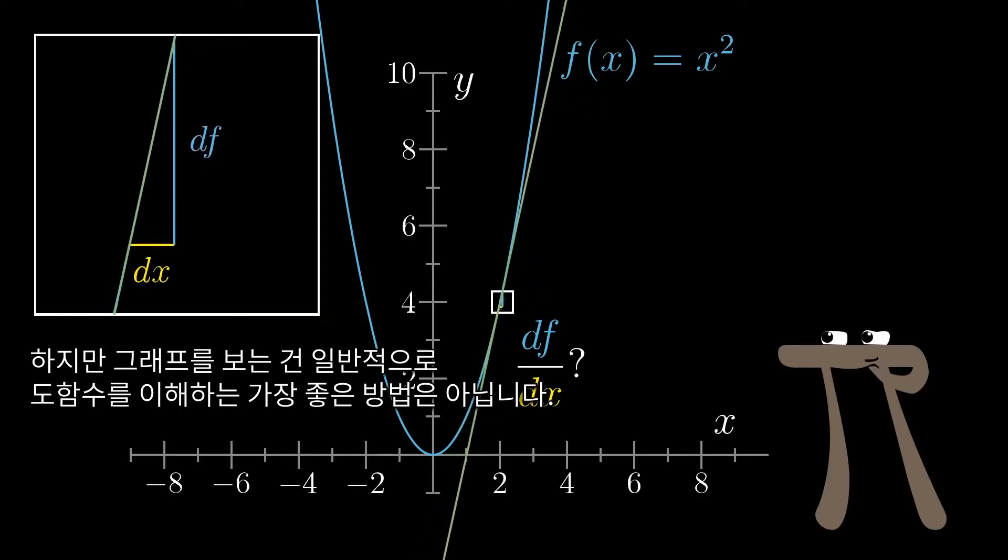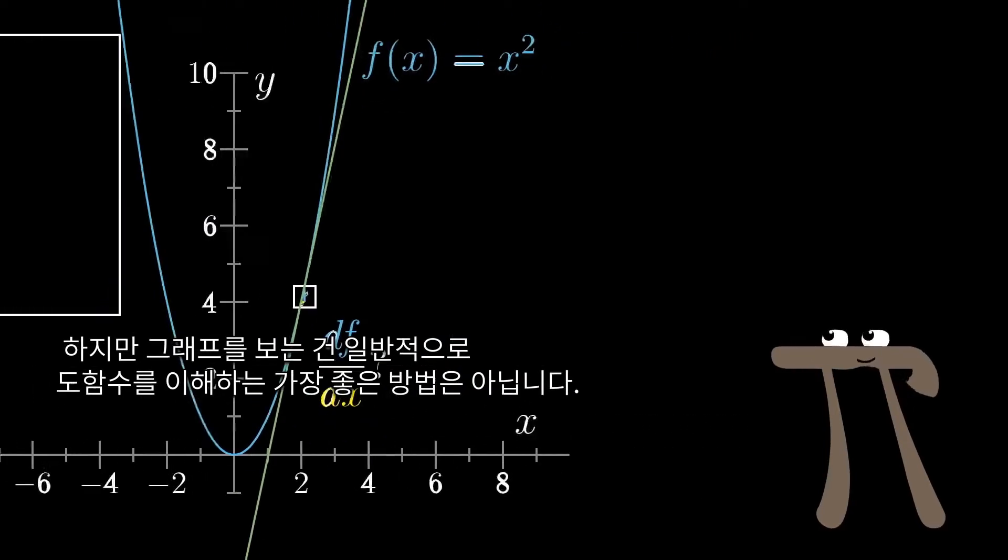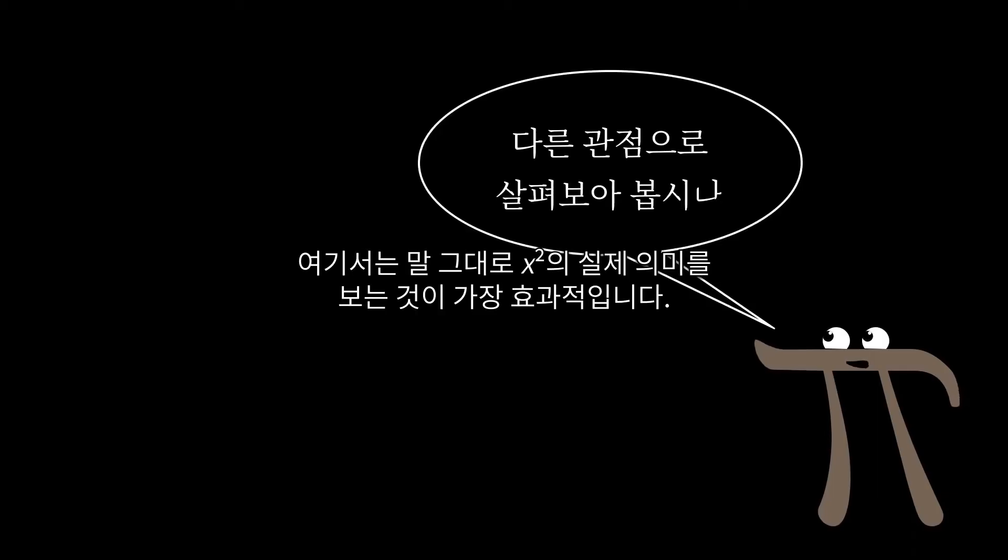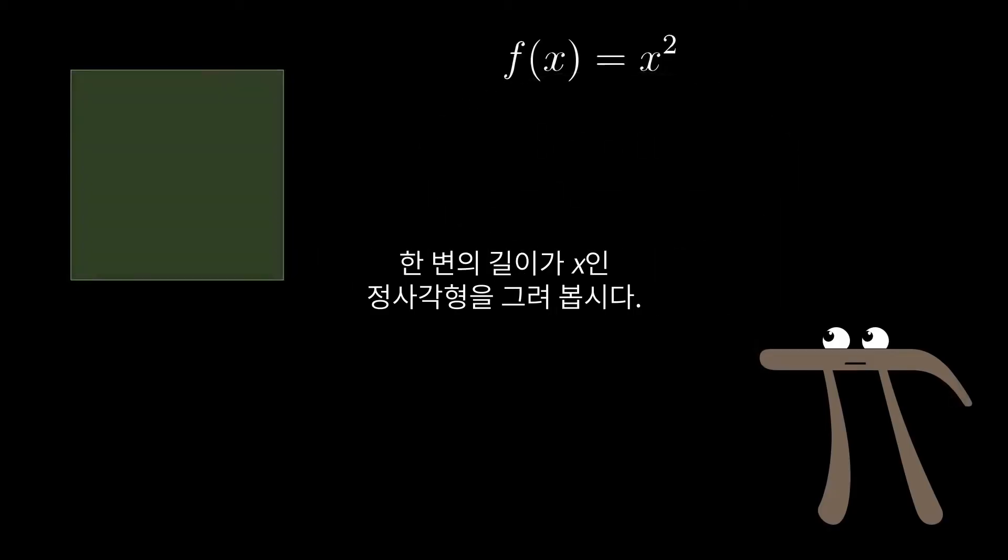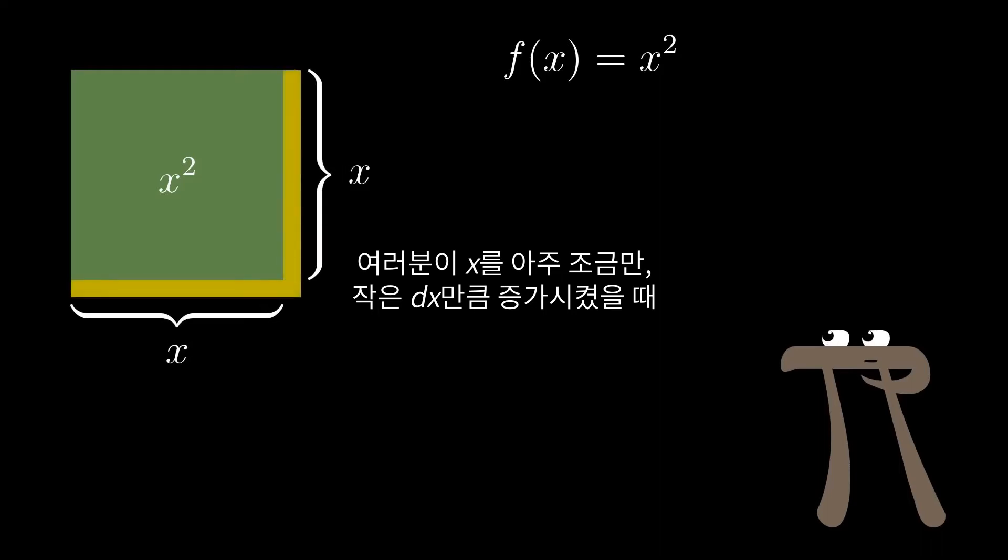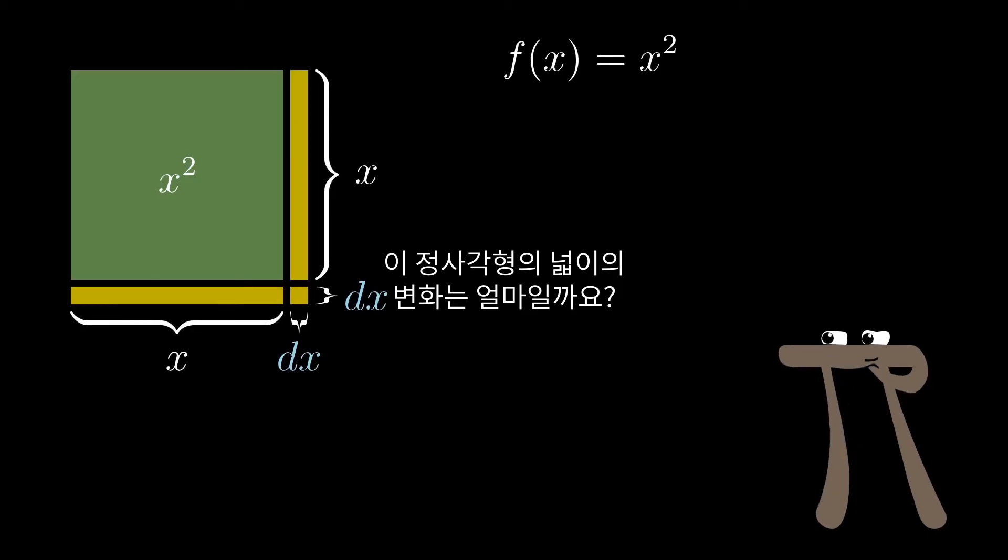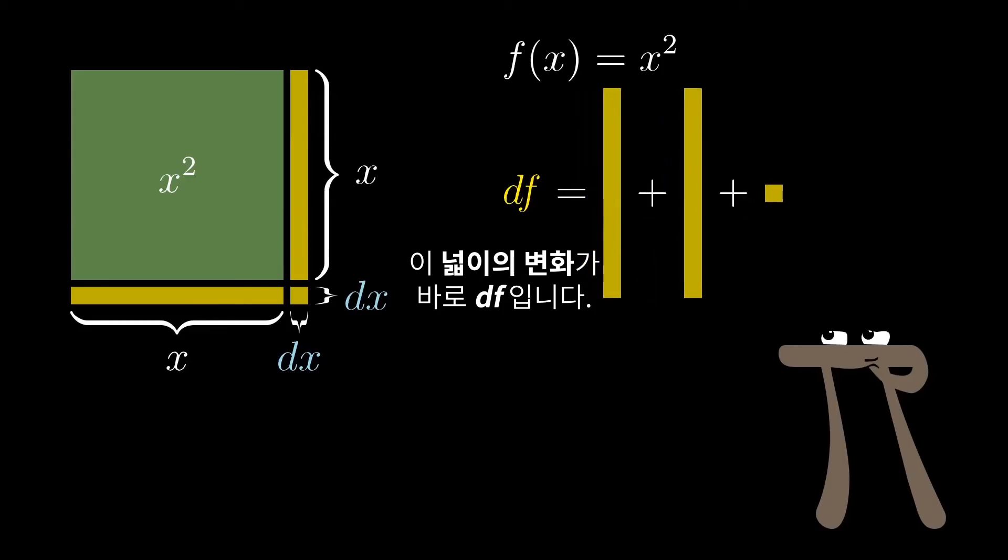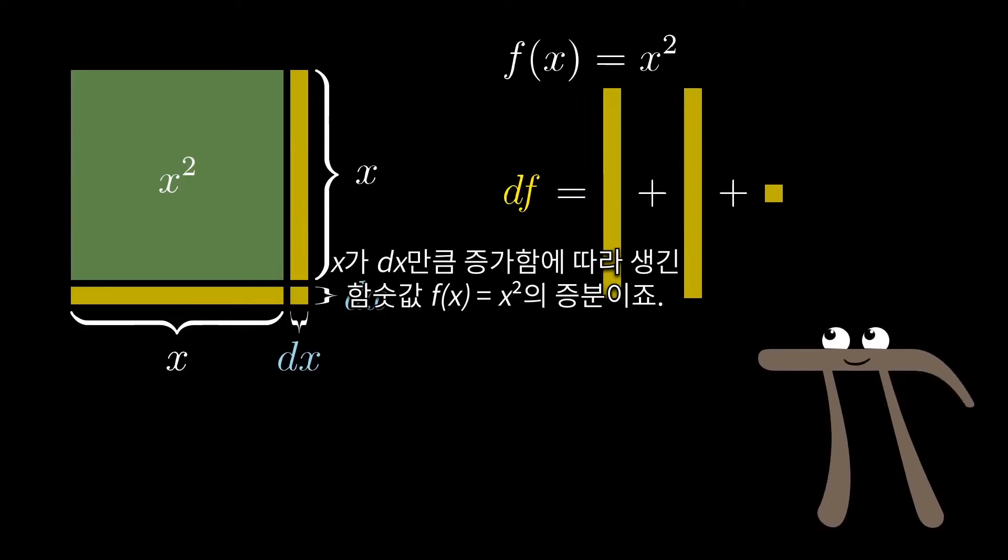But looking at graphs isn't generally the best way to understand the precise formula for a derivative. For that, it's best to take a more literal look at what x squared actually means, and in this case, let's go ahead and picture a square whose side length is x. If you increase x by some tiny nudge, some little dx, what's the resulting change in the area of that square?